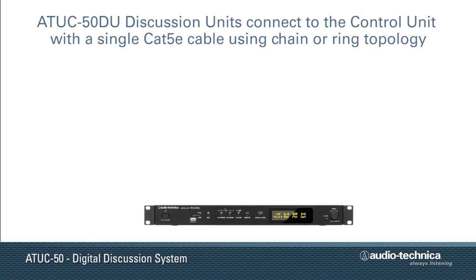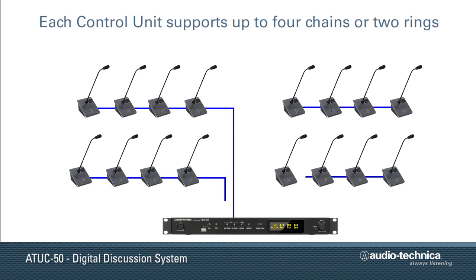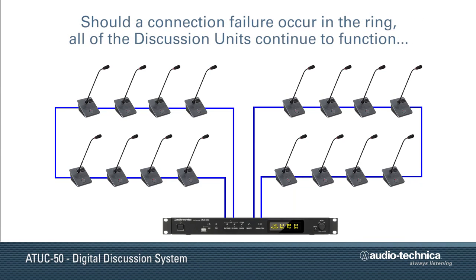Designed for flexibility and reliability, the ATUC50 discussion units connect to the control unit with a single CAT5E or greater cable using chain or ring topology. Each ATUC50 control unit supports up to four chains or two rings. When using ring topology, the system's reliability increases because the control unit recognizes each end of the ring as the beginning of a new chain. Should a connection failure occur in the ring, all of the discussion units continue to function, making the system ideal for mission-critical applications.